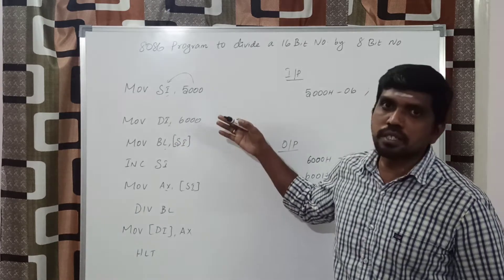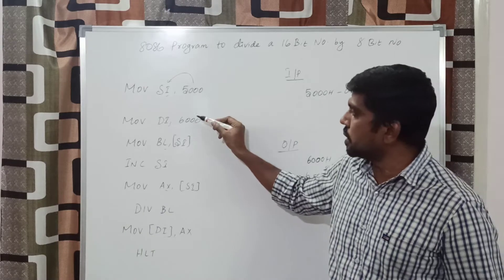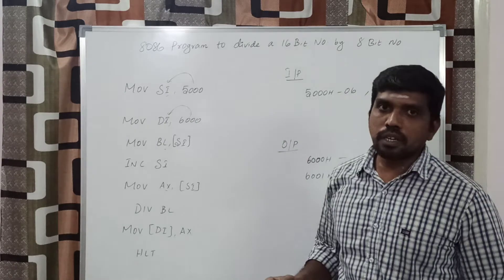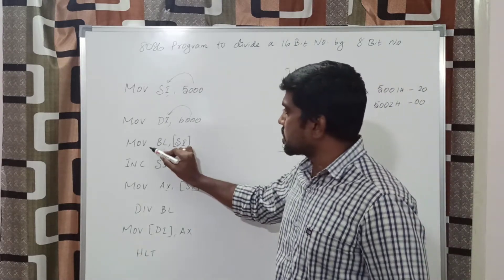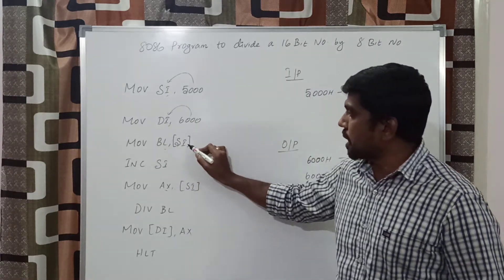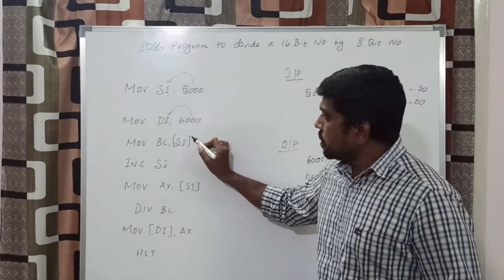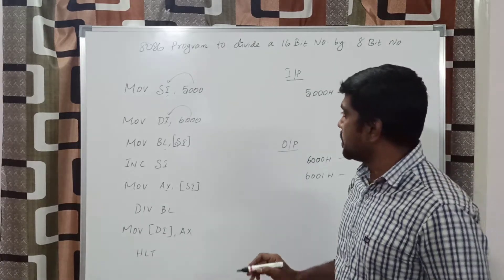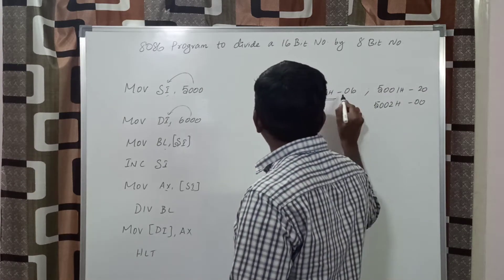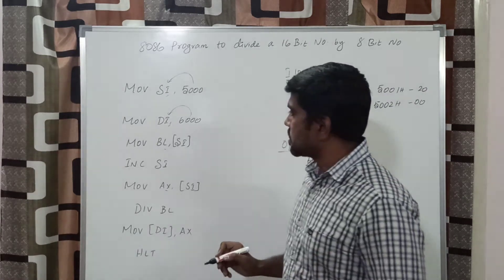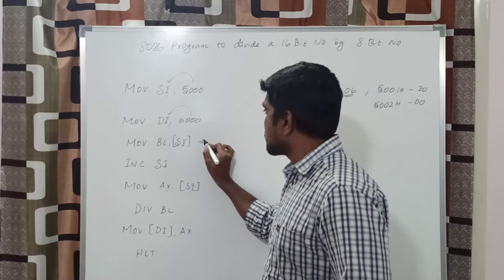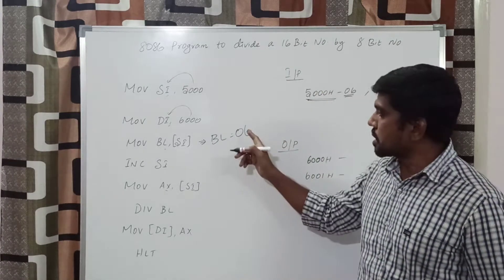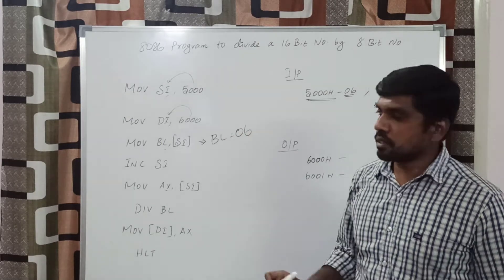After execution of this division program, the result is stored in the memory location 6000h — this value is stored in DI. The third instruction MOV BL, [SI]. Now you get the 8-bit value from memory location 5000h. In this 5000h, the data is 06. After execution of this instruction, BL value is 06. This content is stored in the BL register.